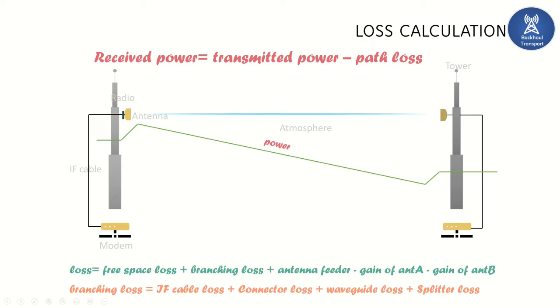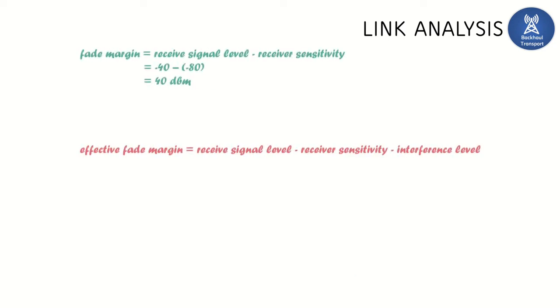Let's discuss about fade margin. What is fade margin? Fade margin is nothing but the difference between receive signal level and the receiver sensitivity. Receive signal level we used to get it from the receiver. And what about receiver sensitivity? Receiver sensitivity is nothing but the minimum power level required by the receiver so that it can successfully deconstruct or decode the baseband signal from the incoming traffic.